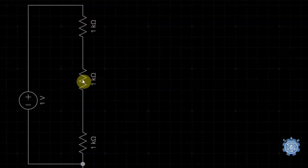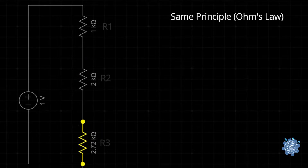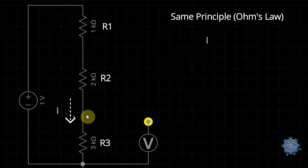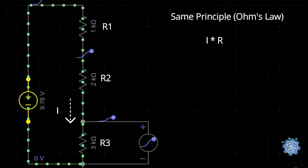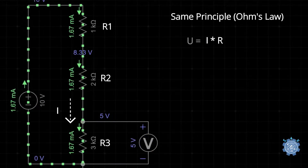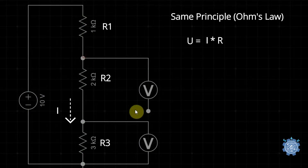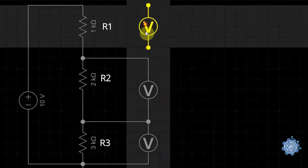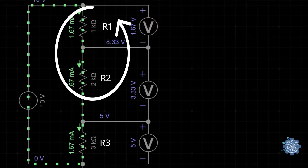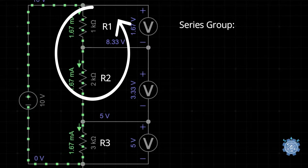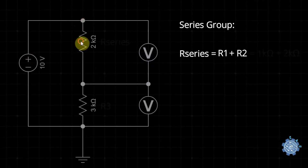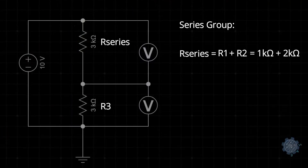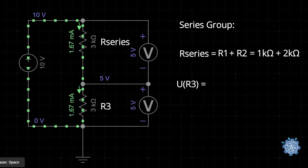It's basically the same principle. We know the current through the resistors and we know the resistance value. Therefore, we can find out the voltage across each resistor. Or, we can simply group some resistors, knowing that the value of several series resistors is the sum of their resistance values, and then apply the formula that we found before.